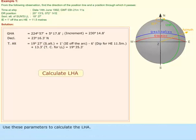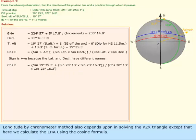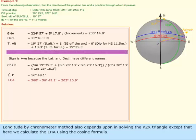Use these parameters to calculate the LHA. Longitude by Chronometer method also depends upon solving the PZX triangle, except that here we calculate the LHA using the cosine formula.